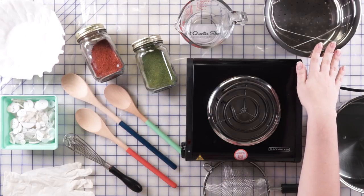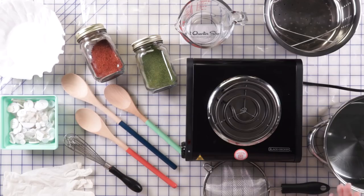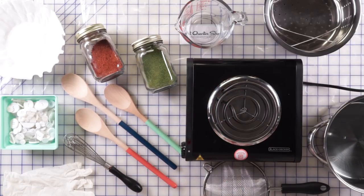This is a strainer that I'll use to put the buttons in and that's how I'll dip them into the pot. I'm going to use this measuring cup here to mix my dye with hot water and that will help dissolve the dye.